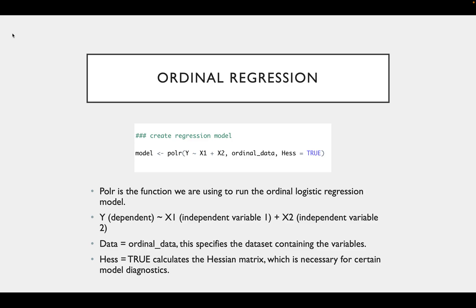We also specify the dataset, which is ordinal_data, as that's what I called our simulated dataset. But this would be whatever you load your data in as. X1, X2, and Y would also be the column names of the variables that you want to run the regression on. Then we specify Hess equals TRUE to run our model diagnostics.